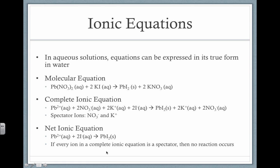If every ion shows up on both sides of the equation — like if there's no precipitate and everything's soluble — then it's a no reaction. This helps us understand whether or not we actually see a chemical change when we mix ionic compounds together.